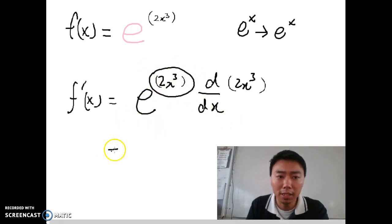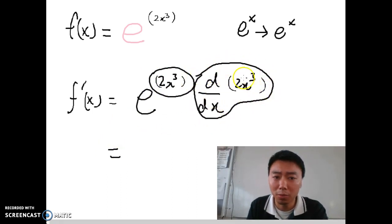And now the next step is differentiate this part. OK, it doesn't matter how small it is, I just do it normally. So 3, bring it down to the 2, becomes 6x. So this is 6x squared.